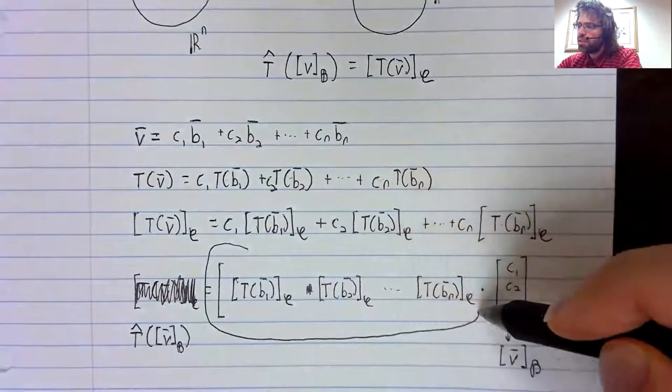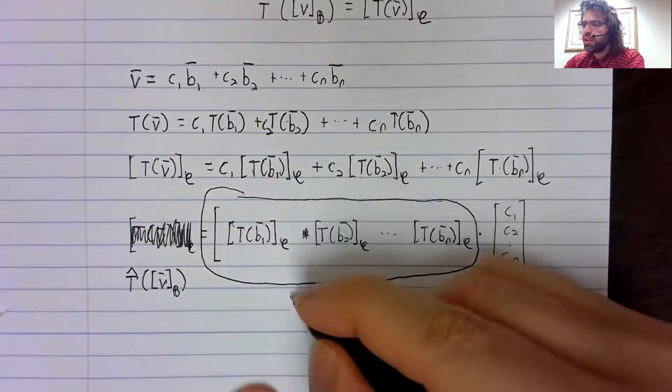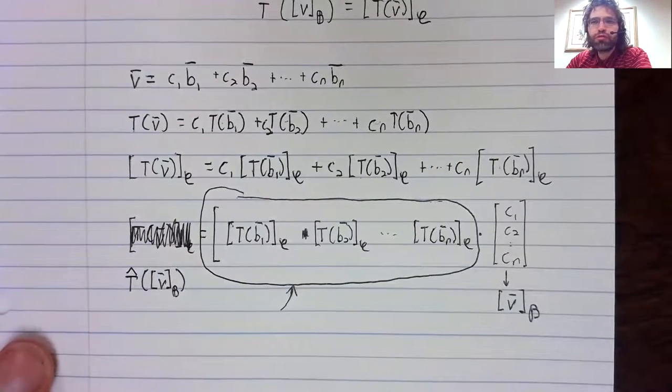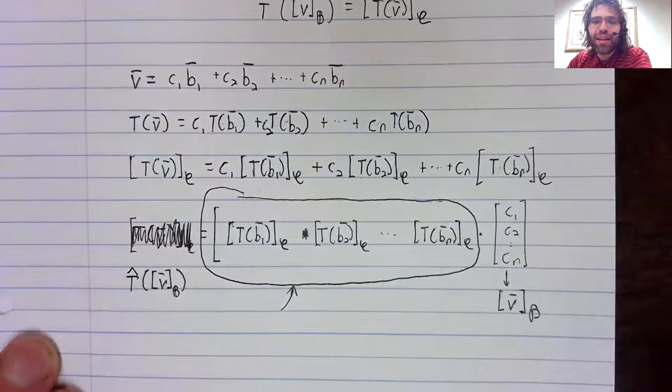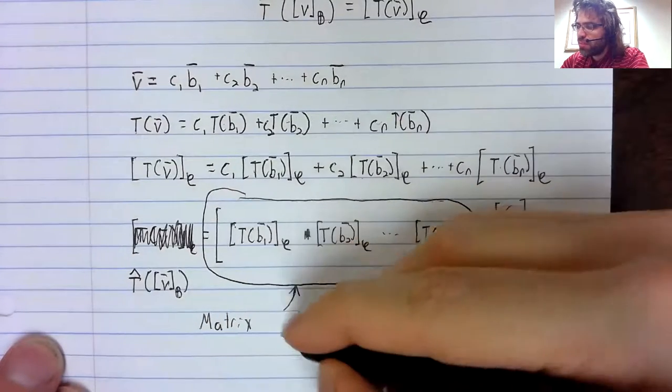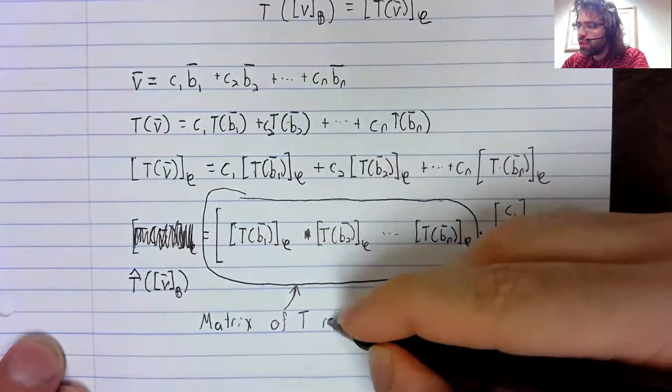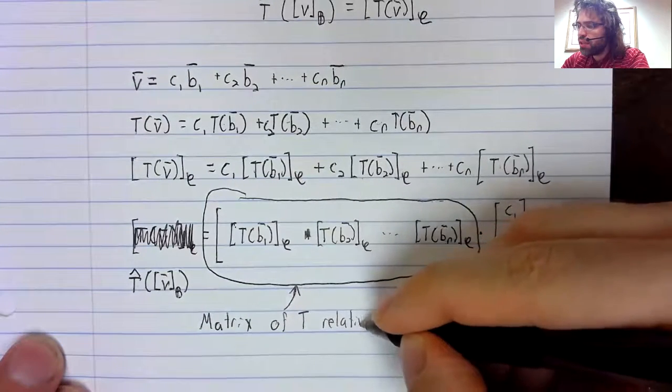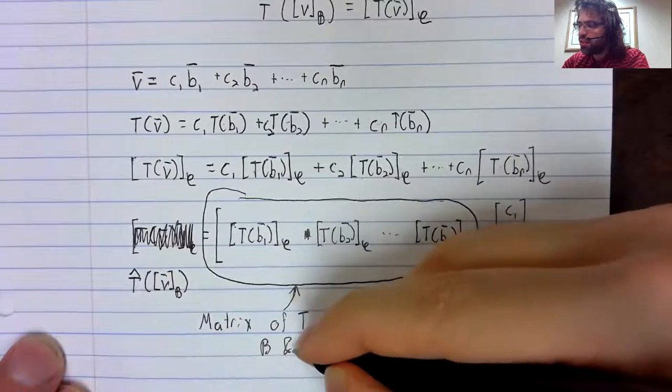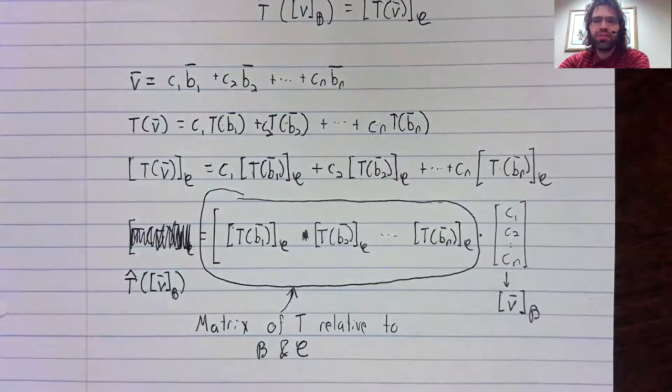And this matrix, we're going to give a name, not, I'm afraid, a very elegant name. It's the matrix of T relative to the bases B and C.